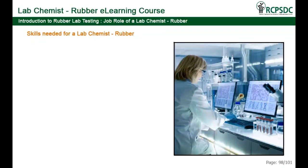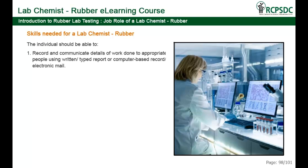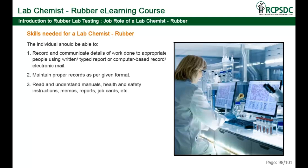Skills needed for a lab chemist in rubber: the individual should be able to record and communicate details of work done to appropriate people using written or typed reports, computer-based records, or electronic mail. Maintain proper records as per the given format. Read and understand manuals, health and safety instructions, memos, reports, job cards, etc.